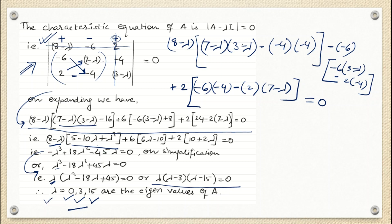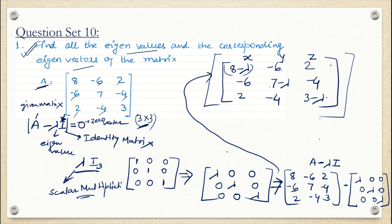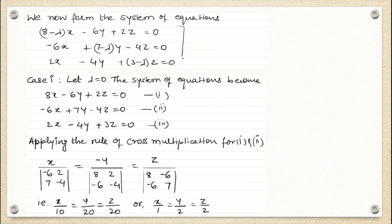Since we have the eigenvalues, the third step is to form the system of equations from the A - λI matrix. The first column corresponds to variable X, the second to Y, and the third to Z. So the first equation is: (8-λ)X - 6Y + 2Z = 0, and similarly for the other two rows.